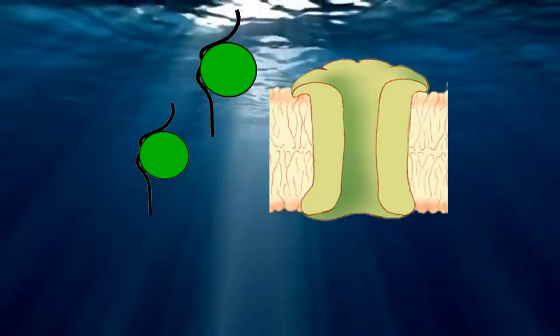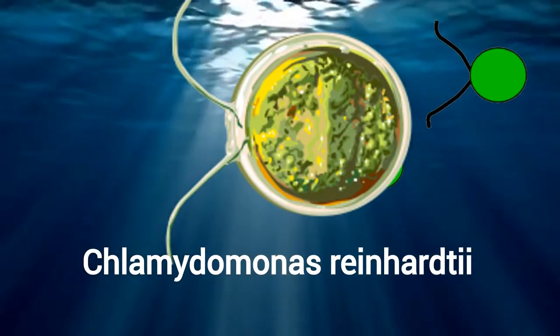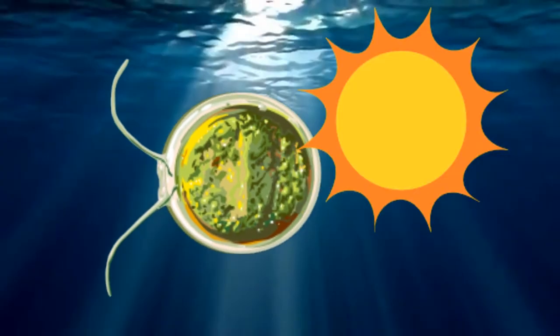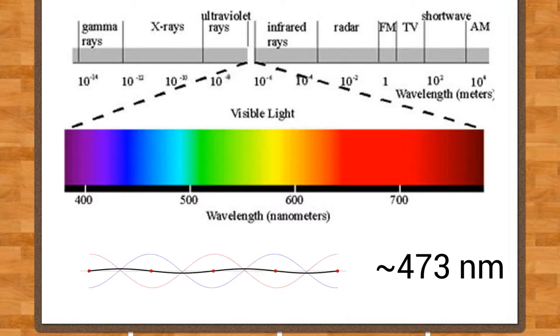Channelrhodopsin 2, specifically found in the algae Chlamydomonas reinhardtii, is sensitive to light at a wavelength of approximately 473 nanometers, aka blue light.